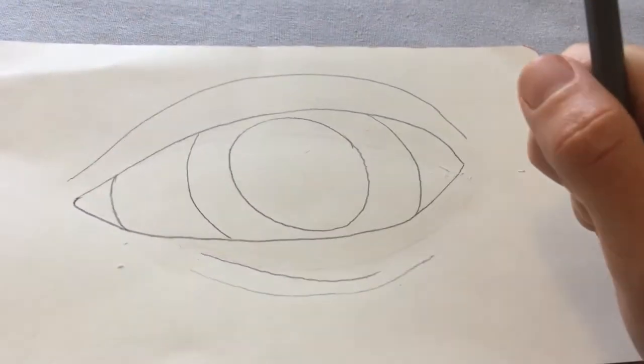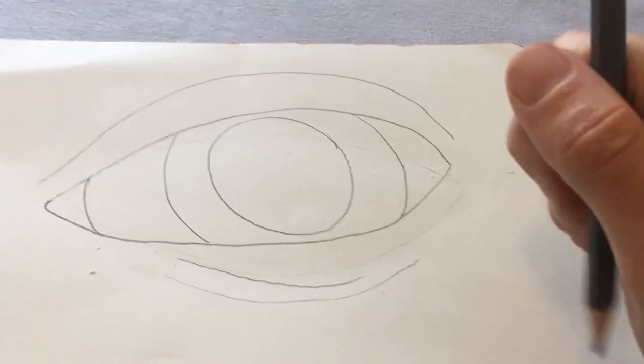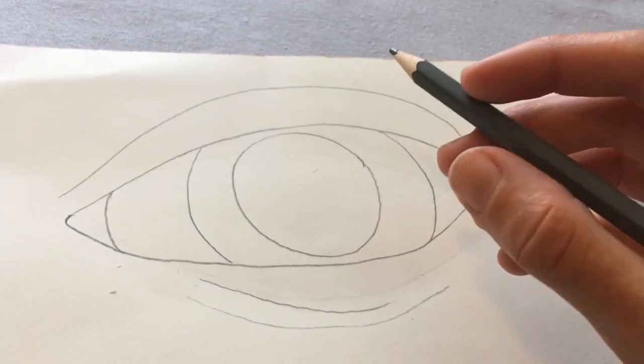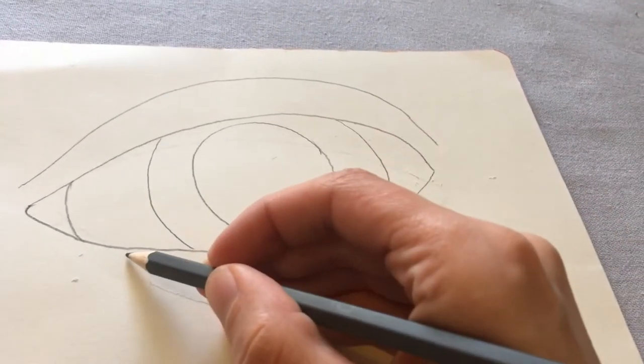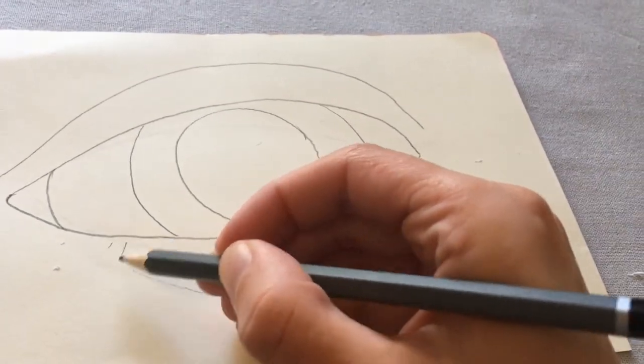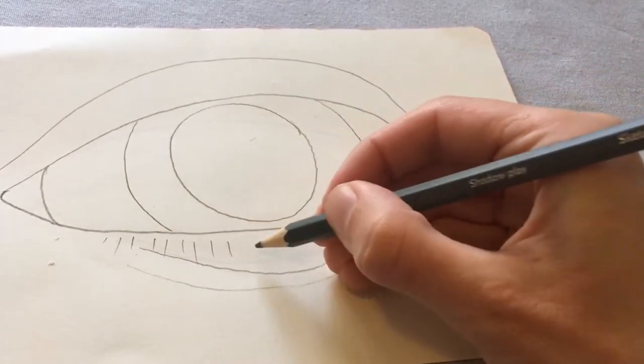Now we're going to zoom in and look really, really closely at the shape of your eyelashes. I can see a few small little eyelashes all the way along the bottom eyelid. So I'm going to do lots of eyelashes coming out from there.